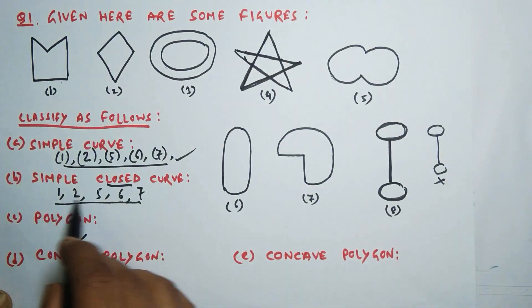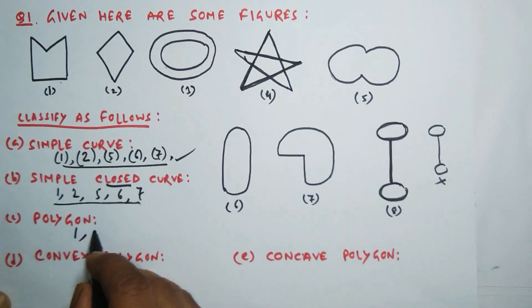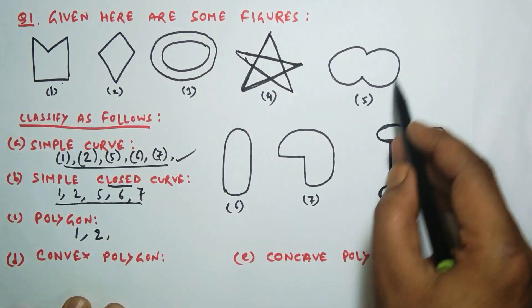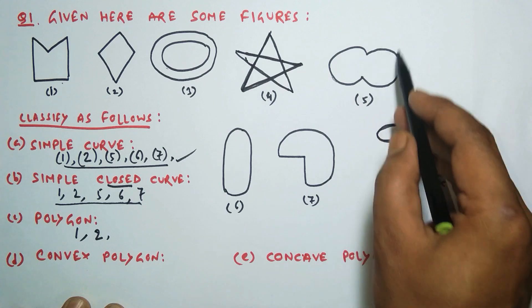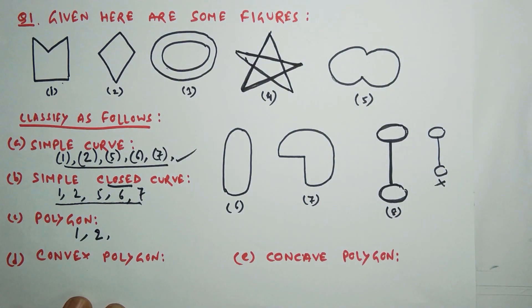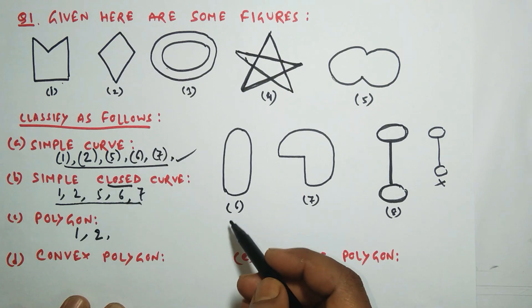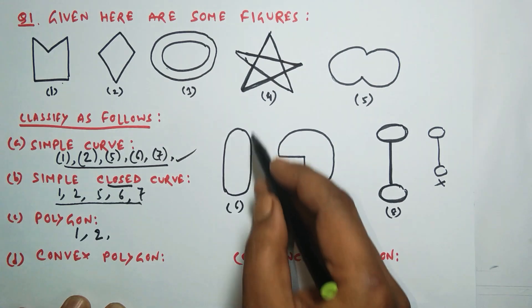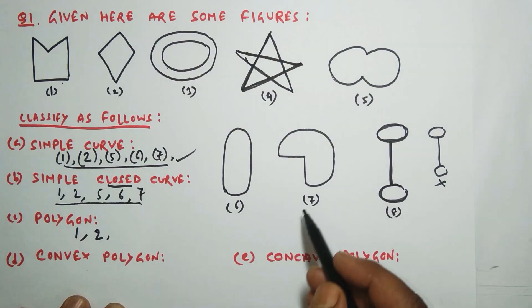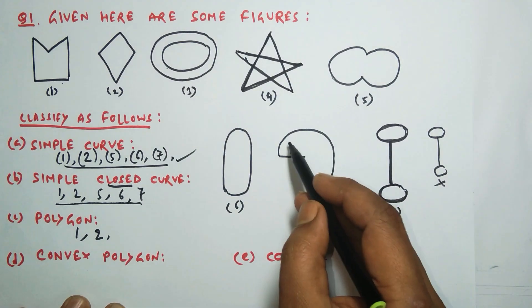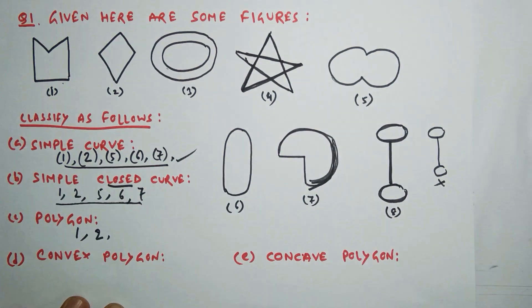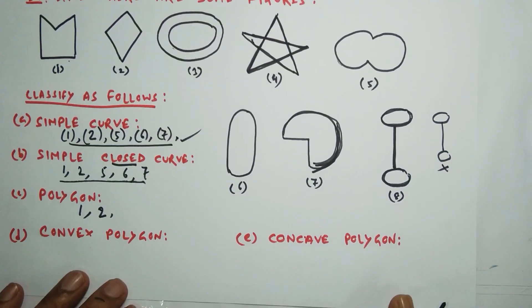Number two is also simple, closed, and entirely made of line segments, so it is a polygon. Number five, although closed and simple and not intersecting, is not made of line segments, so it cannot be a polygon. Number six is also not made of line segments, so not a polygon. Number seven has parts that are not line segments, so seven is also not a polygon. So only one and two are polygons.